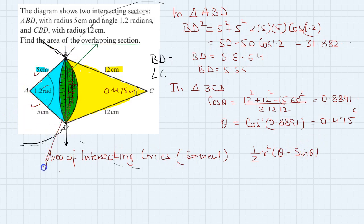The area of this segment equals half times 5 squared times 1.2 minus sine 1.2.